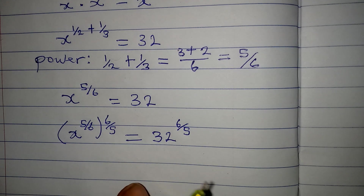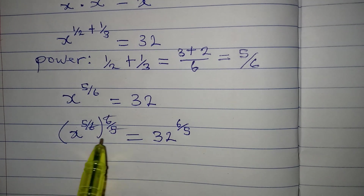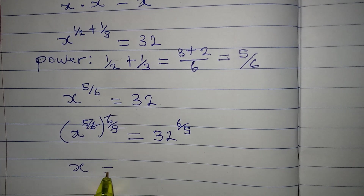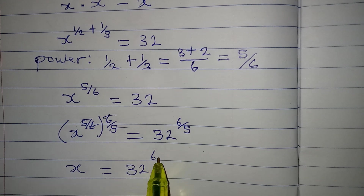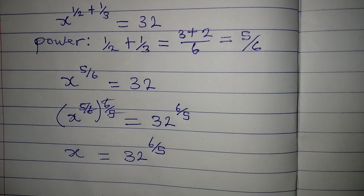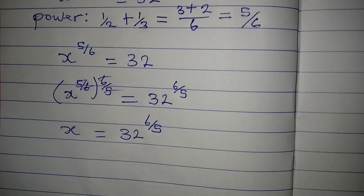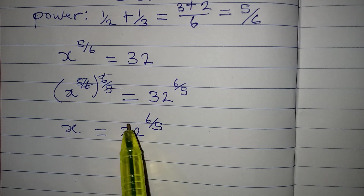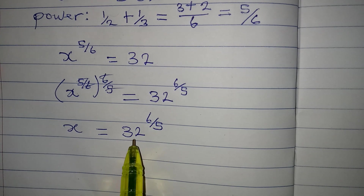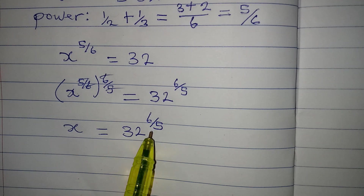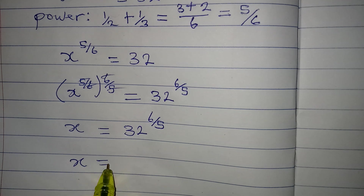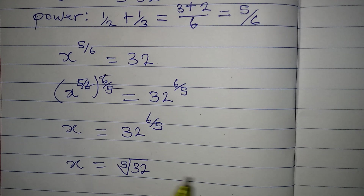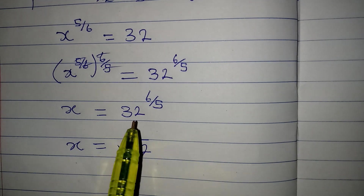The 5 over 6 and 6 over 5 cancel, and we have x alone on the left, equal to 32 to the power of 6 over 5. There is a law that says if you have a fraction as a power, it means you take the root — so this becomes the fifth root of 32, raised to the power of 6, because of the 6 over 5.